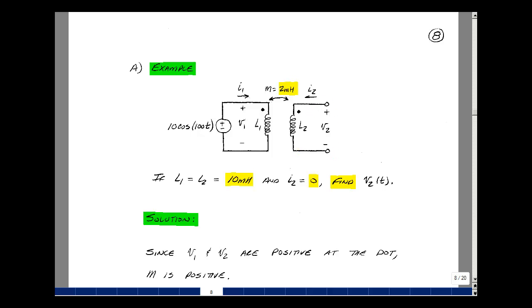Let's start with our transformer equations. The voltage V1 and V2 are positive by the dot, and so that's going to give us a plus sign for M.